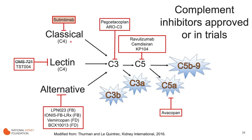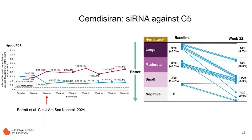Since classical and lectin pathways are activated in only a subset of patients, this leads us more towards drugs blocking the alternative pathway or central nodes of the system. One interesting new drug is an siRNA against C5 — not just blocking C5 but actually preventing the body from producing it. Early results published in CJASN show a sustained reduction in proteinuria with this C5 inhibition, appearing quite effective for IgA nephropathy. The authors also showed hematuria was reduced in almost all patients treated, consistent with reduced glomerular inflammation.